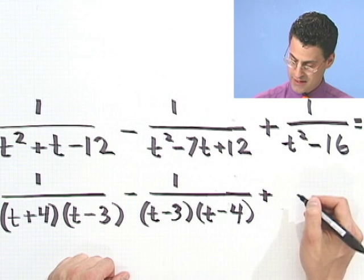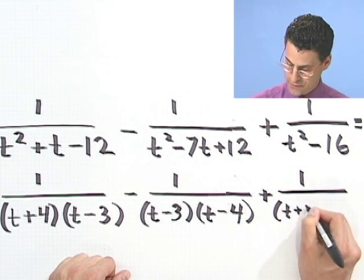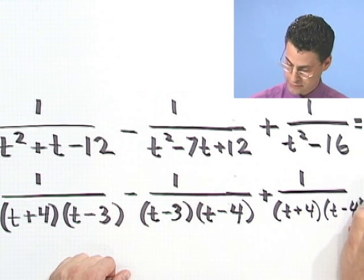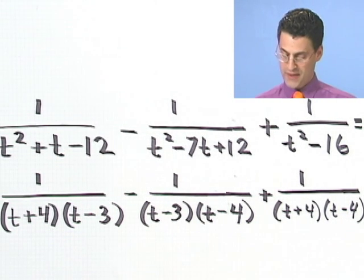And the last thing, happily, is the difference of two perfect squares. So I can say t plus 4, t minus 4. Okay, well that's how we're looking.